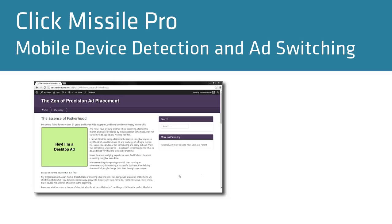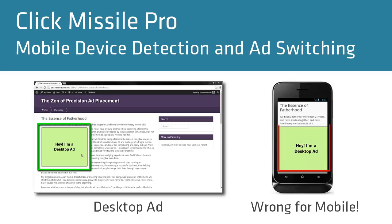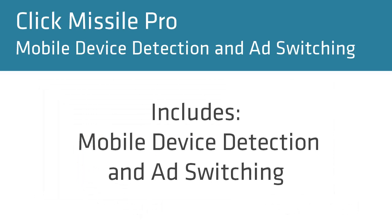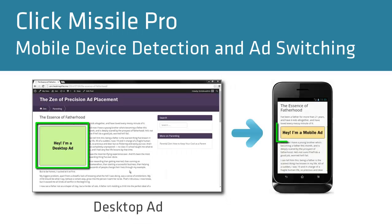The ads that you show on your site for a desktop computer are often the wrong size or in the wrong position when viewed on a mobile device. That's why Qlik Missile includes a mobile device detection and ad switching capability, so you can present the right ad in the right position on the right device.